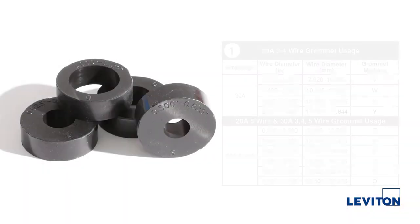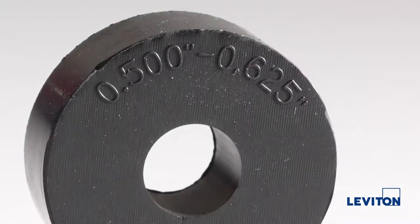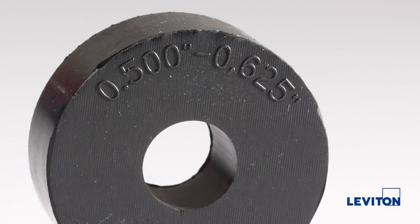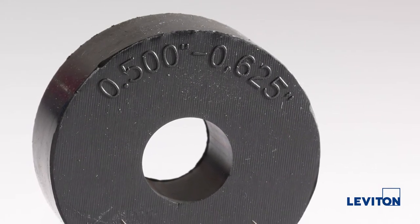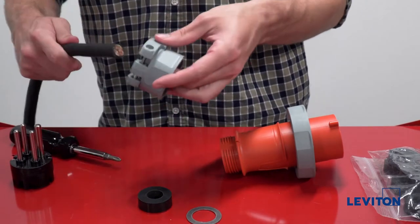Next, select the proper grommet for your cable size using table 1 in the installation instructions. You may also use the molded in cable range diameters to guide your selection. Once you have selected your grommet, you may begin your assembly.